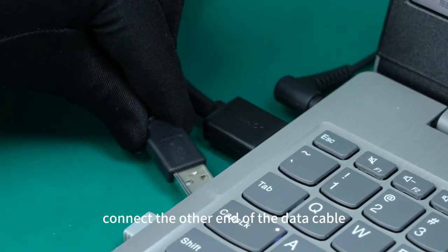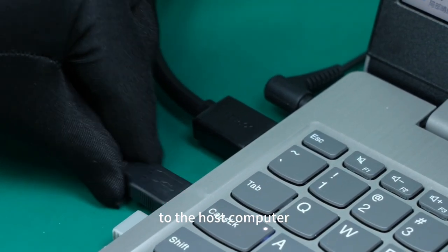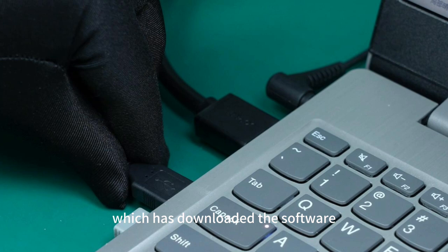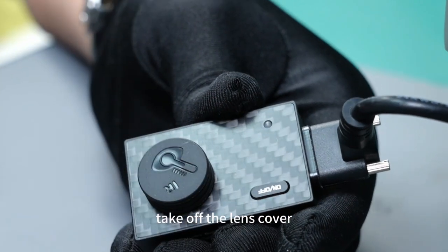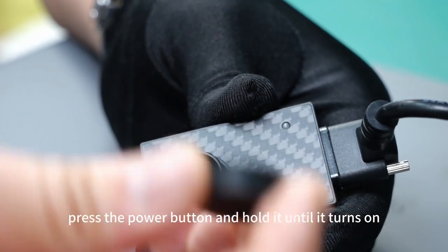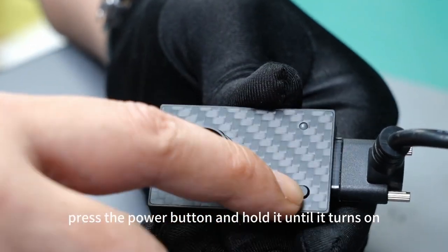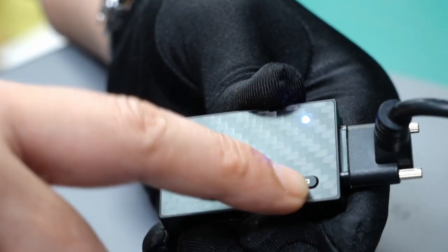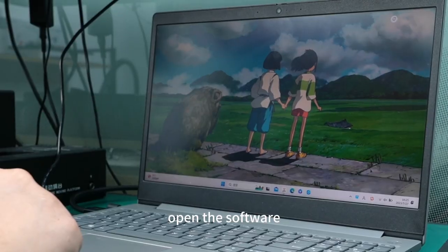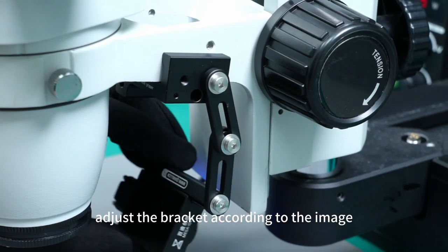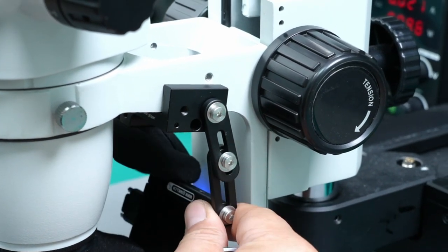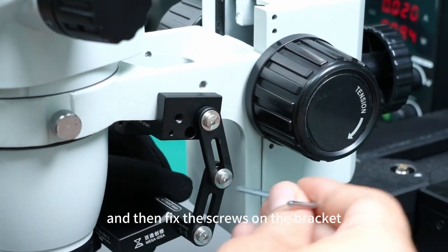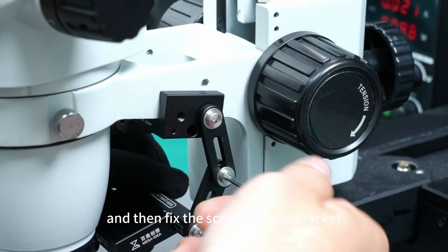Connect the other end of the data cable to the host computer, which has downloaded the software Chainlink IR for PC. Take off the lens cover, press the power button and hold it until it turns on. Open the software, adjust the bracket according to the image shown on the software, and then fix the screws on the bracket.